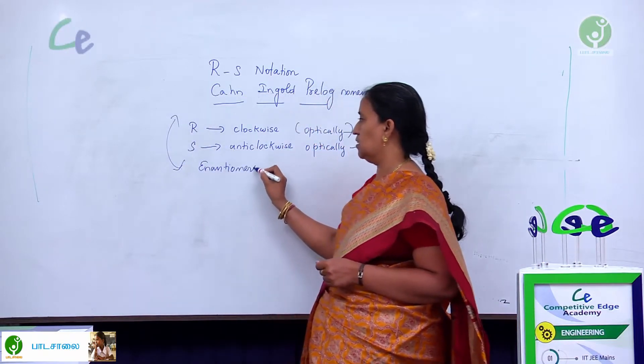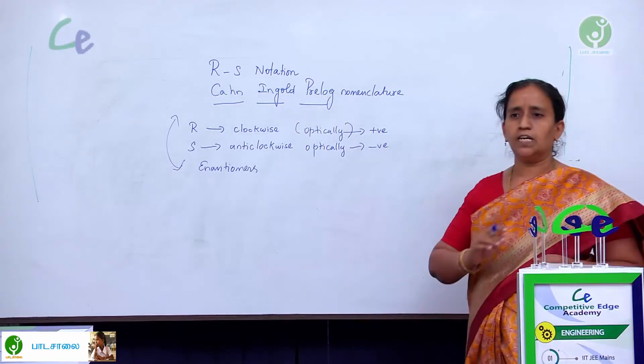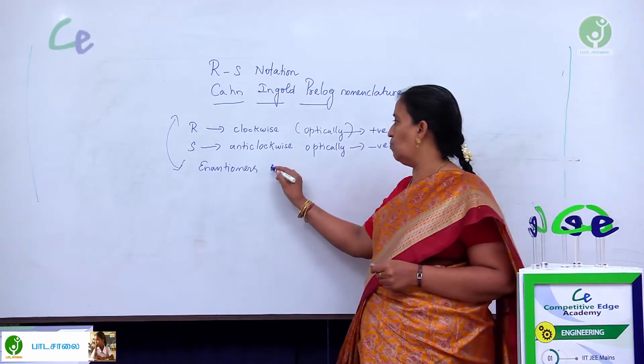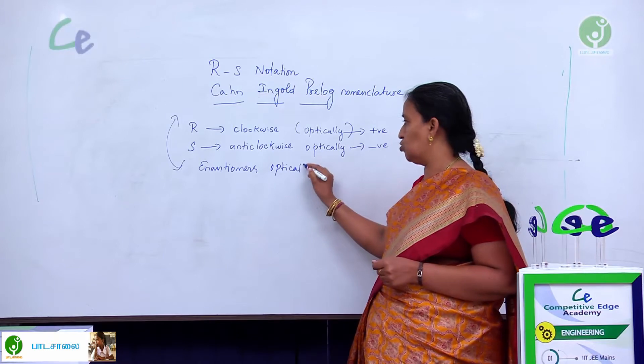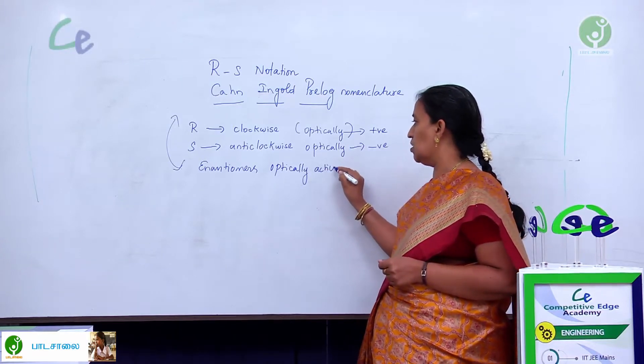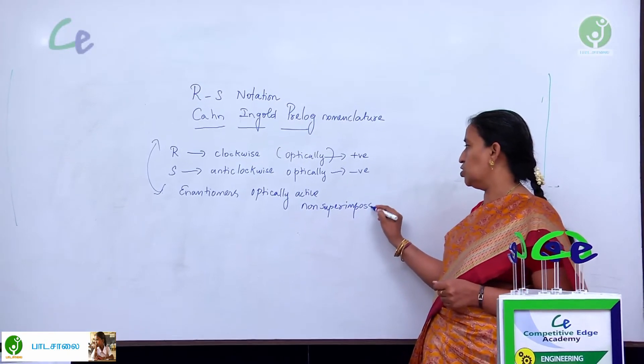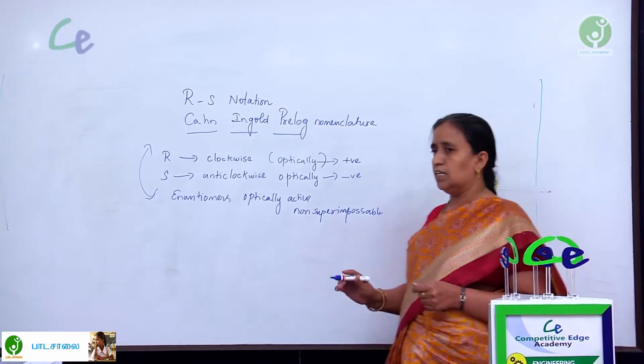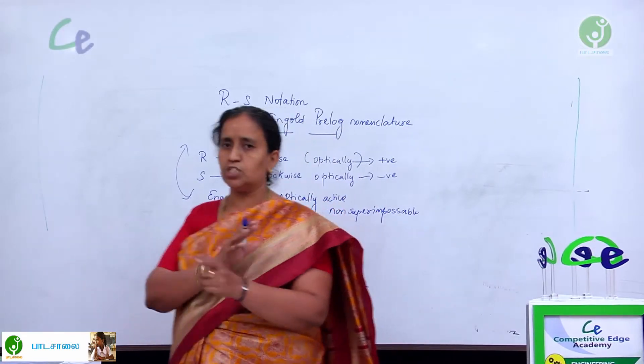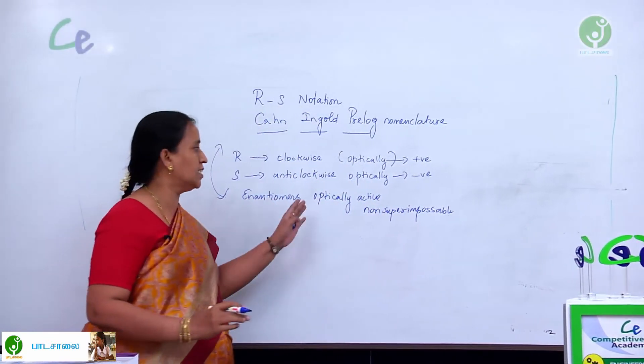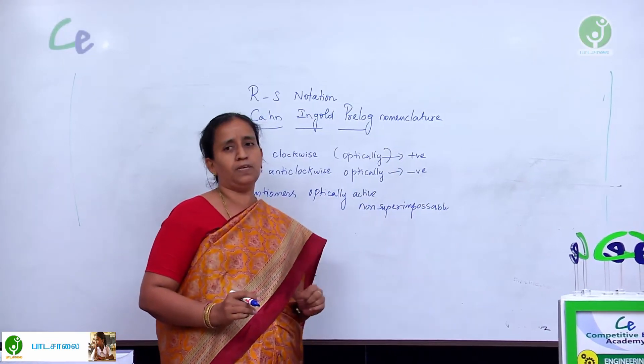What are enantiomers? Enantiomers are optically active isomers but they are all non-superimposable mirror images. What is meant by non-superimposable mirror images? The image and object should not match with each other. That is called as the non-superimposable mirror image.